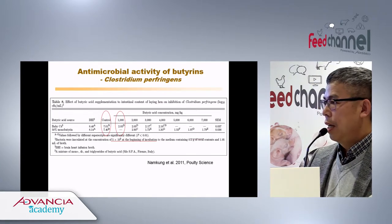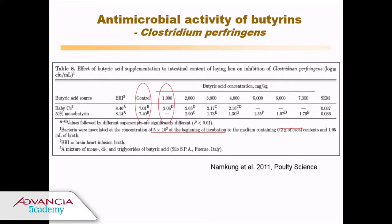However, at different concentrations of butyrate — even at 1,000 ppm — we only detected around 10² CFU. So the antimicrobial activity is obvious. This study was conducted under anaerobic conditions.